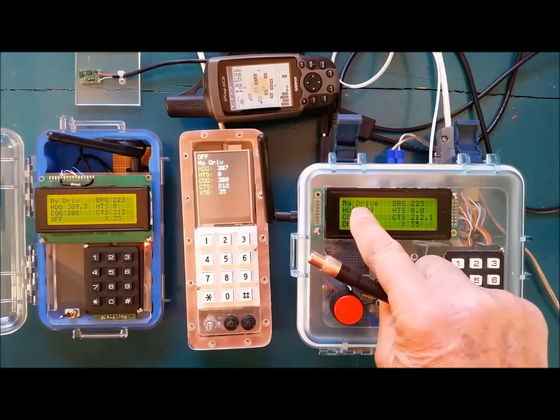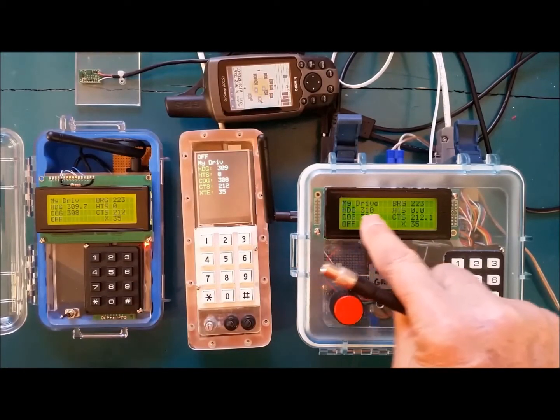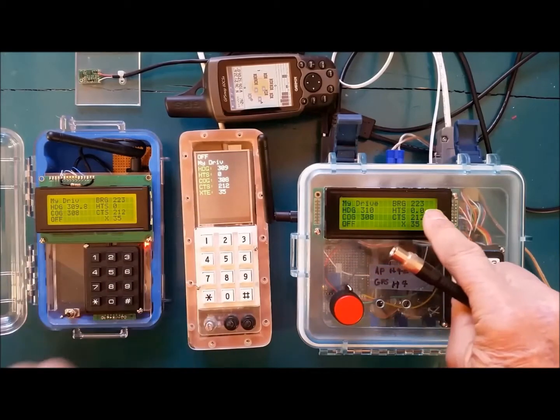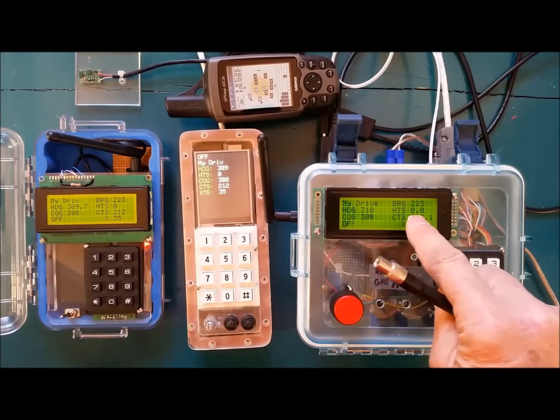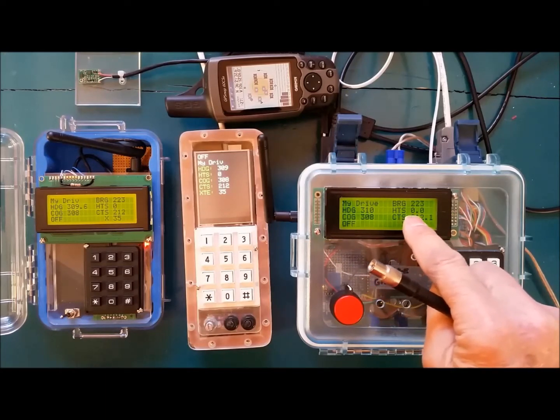Here is the waypoint that the GPS is programmed to. That's my driveway. Over here is the bearing to the waypoint. And this is the heading to steer. And this is the course to steer. Now we'll cover that in just a second.